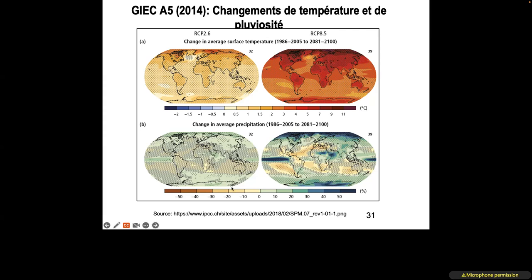Precipitation increases will be much more important in zones from the central Sahel toward East Africa, while droughts are expected in West Africa. These are the kinds of hypotheses already advanced, which lead the IPCC to warn the UNFCCC to better negotiate between countries and parties, so that each country's mitigation commitments are reviewed, with transparency, to limit warming to 1.5°C or 2°C according to our capacity to mitigate greenhouse gases in the atmosphere.